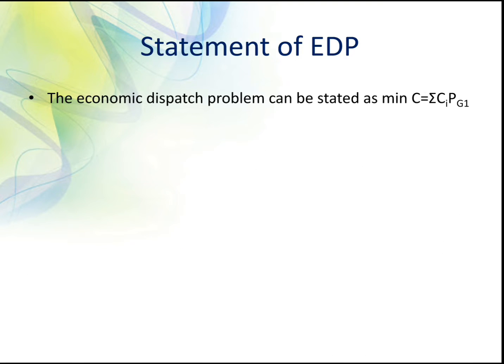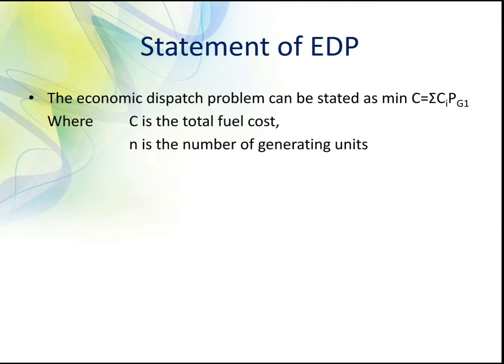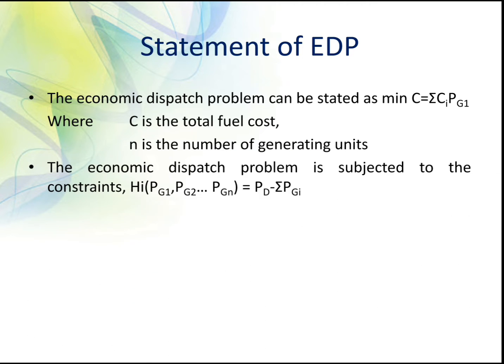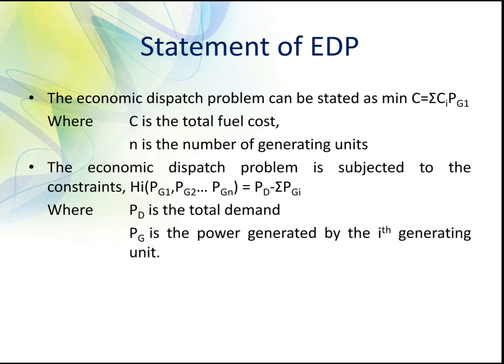Mathematically, the economic dispatch problem can be stated as a minimization problem. The minimization cost function C is equal to summation of C_i(P_gi), where C is the total fuel cost and n is the number of generating units. The problem is subjected to the constraint h_i(Pg1, Pg2, ..., Pgn) = Pd minus summation of P_gi, where Pd is the total demand and Pgi is the power generated by the i-th generating unit.